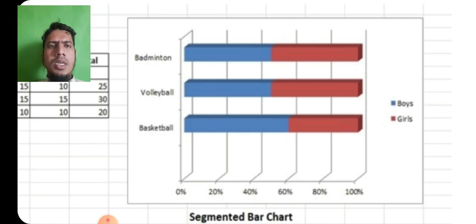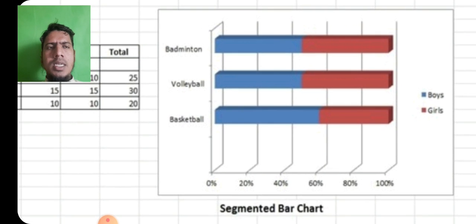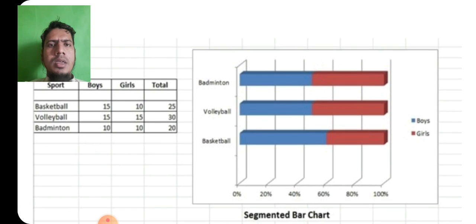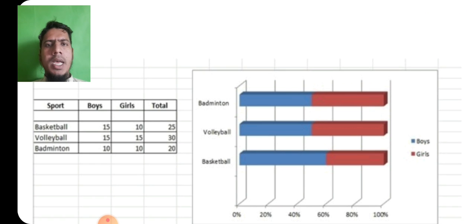100% क्यों शो की जाती हैं, जैसे नज़र आ रहा है, यहां पर हमें नीचे x-axis में देखते हैं तो 100% जहां लिखा हुआ है, तो तीनों बार 100% तक पहुँची हुई हैं. इसको समझते हैं, हम यहां पर यह table लिया है. अब इस table के अंदर basketball, volleyball और badminton हैं, सबसे नीचे badminton है.